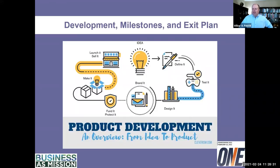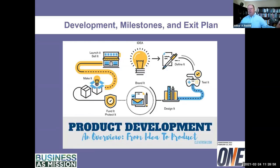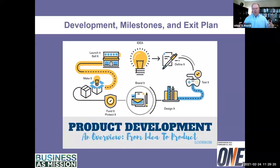Then we have development, milestones, and exit plan. Development could be product development — defining products, testing, designing, branding, funding, making, selling. Milestones are at what point should certain things happen. For a new business or product line, you might say by the end of 2021 we'll have these things done, by the end of 2022 these things will happen. The exit plan asks: is our goal to develop something and sell it, or to pass it off to the next generation? What does that exit look like?